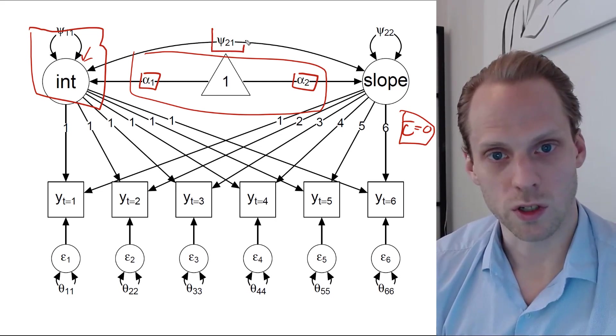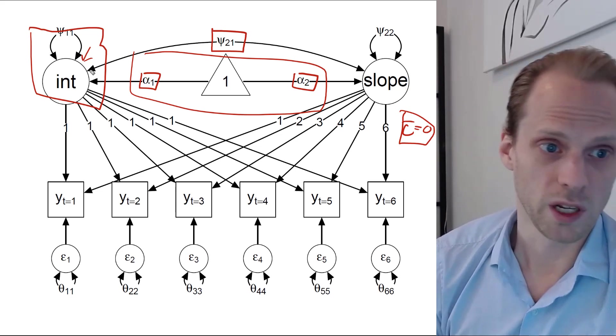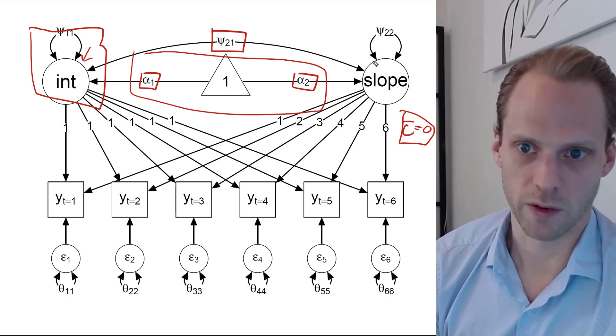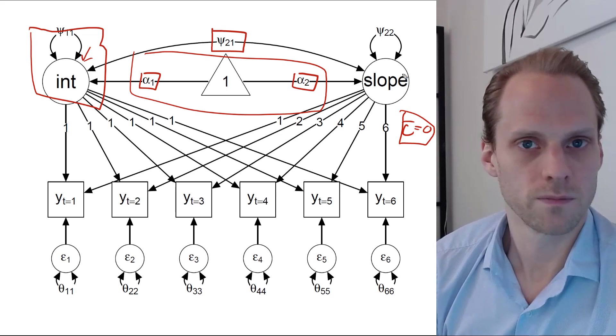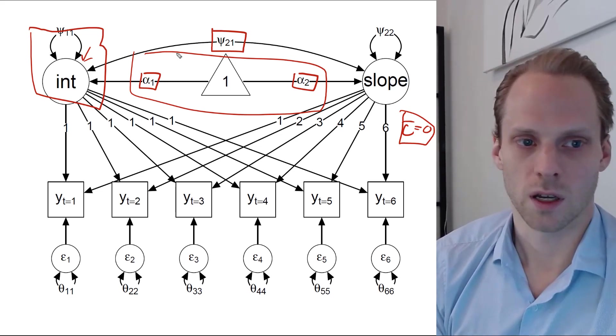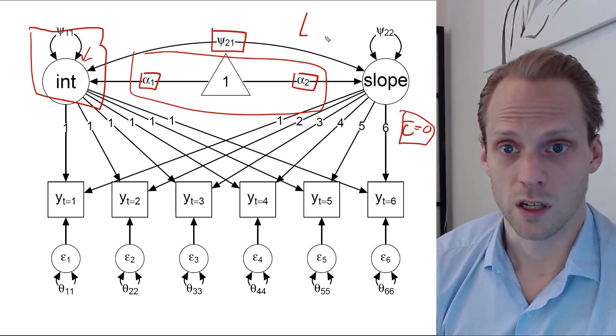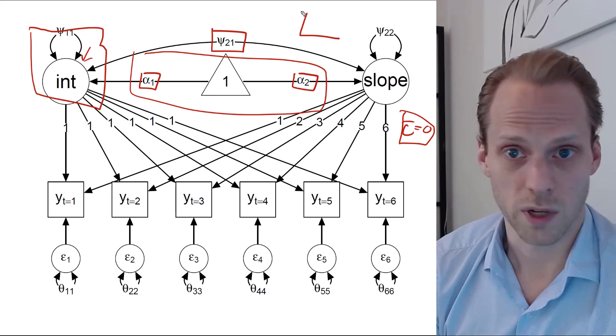And then the nice thing we can do is you can also look at the correlation between this intercept and slope. And that might mean that people that start higher have a lower rate of change. That could be, for example, in certain cases, if you have a boundary effect, for example, if this is symptoms.